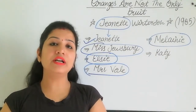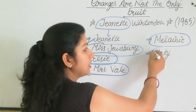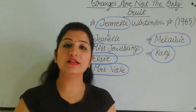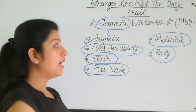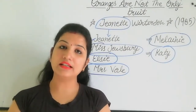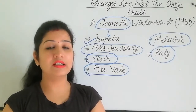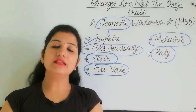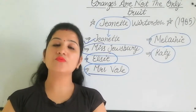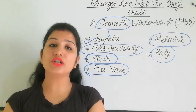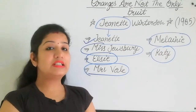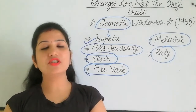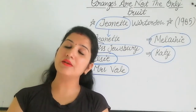Everything changes when a new character named Katy appears. Katy has recently converted to Christianity, and Janet develops a new relationship with her. The church members become very angry. They say Janet has not fulfilled her responsibilities to the church properly, and so they decide to expel Janet from the church.